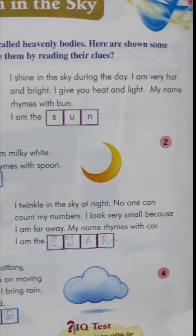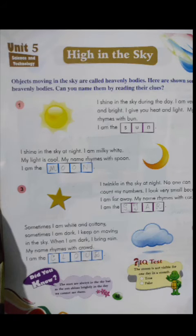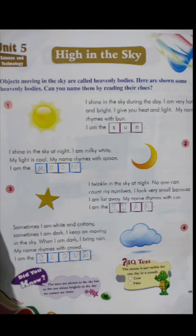Sun rhymes with bun. It gives us heat and light, and is the main source of energy on Earth. If there is no sun there will be no life. Did you know the sun is also a star? The sun looks bigger because it is nearer to us than the other stars we see at night. Those stars look smaller because they are very far away. The sun has its own light and gives light and heat to the world.